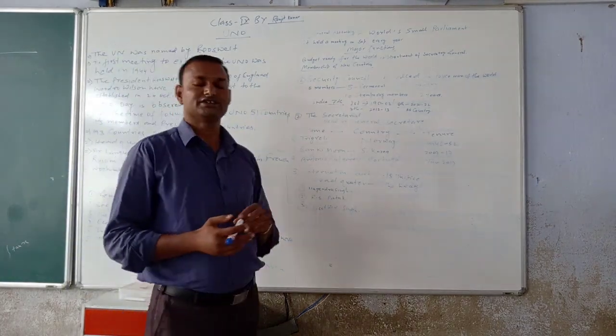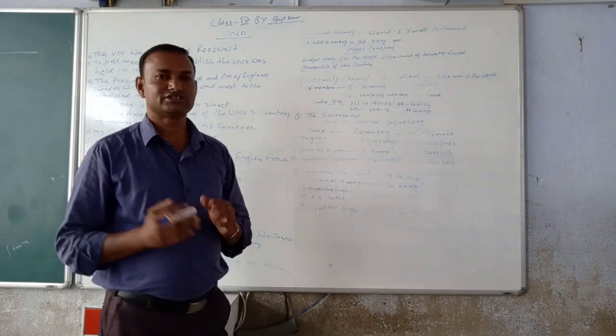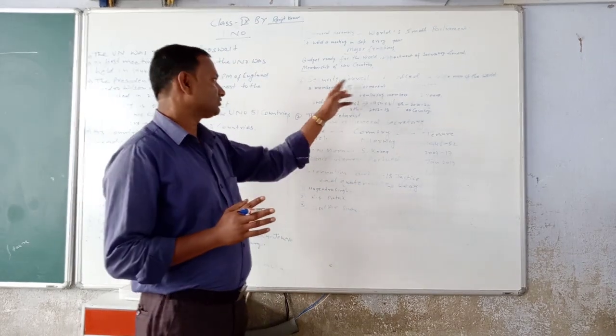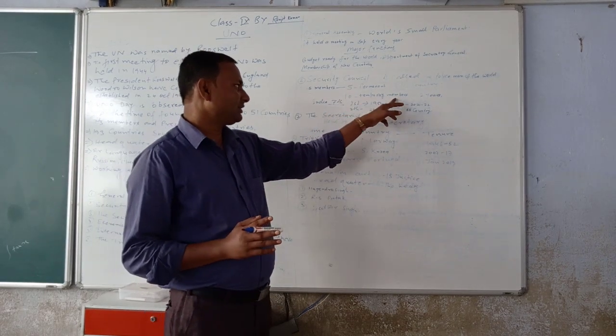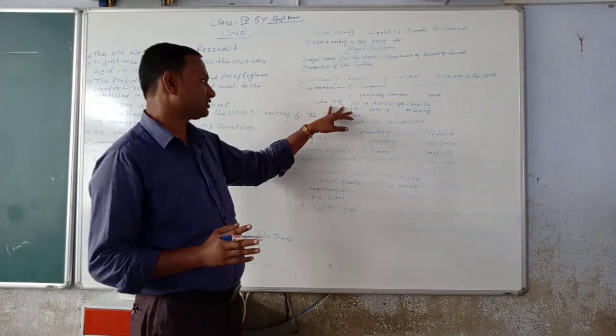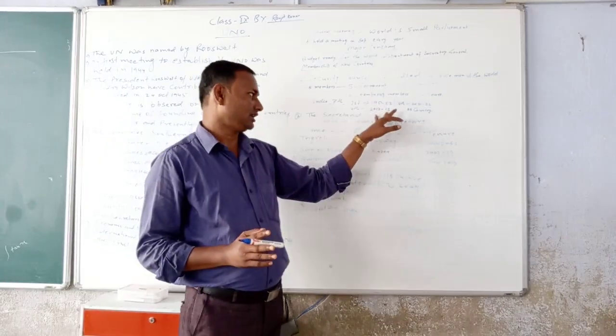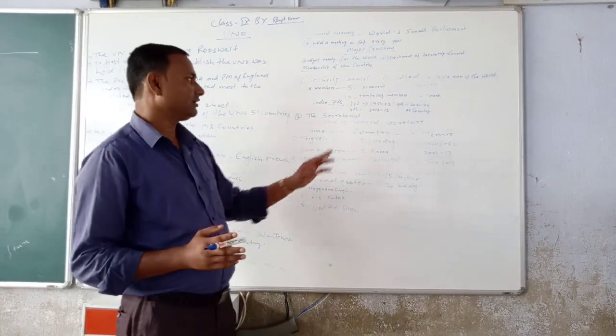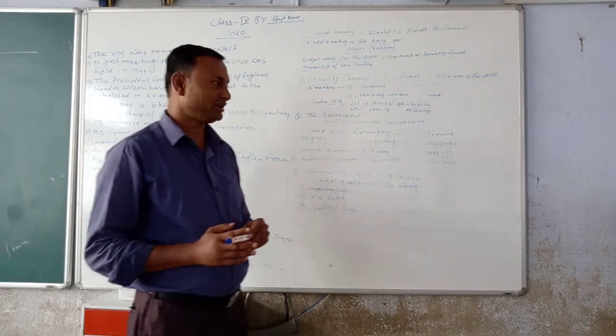The next topic is the Security Council. The Security Council is called the Policeman of the World. There are 15 members in the Security Council. 5 permanent members and 10 temporary members. 10 temporary members only for 2 years. India has been member from 1951 to 1952 and the last time 2011 to 2012. But the latest 2021 to 2022, temporary membership for India.